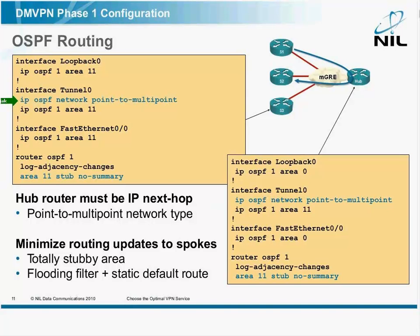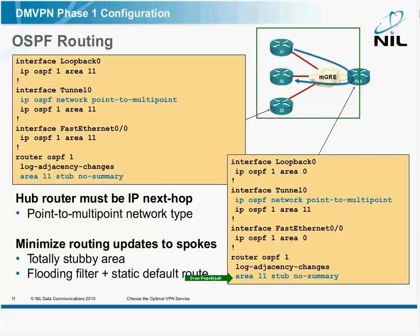It's also a good idea to reduce the amount of routing information sent over the MGRE between the hub and the spokes. To do that, you should configure the MGRE cloud as a stub area, and maybe even better, stub with no summary.